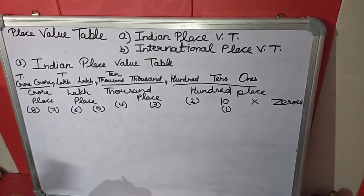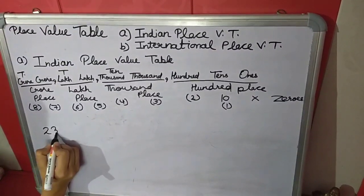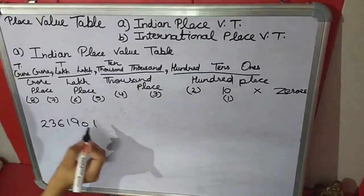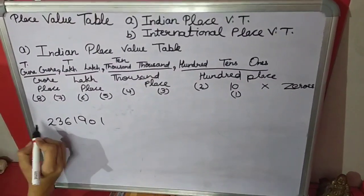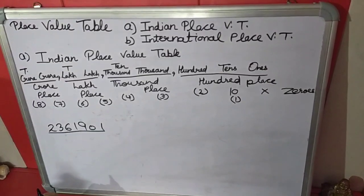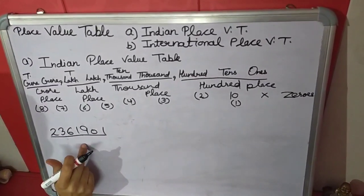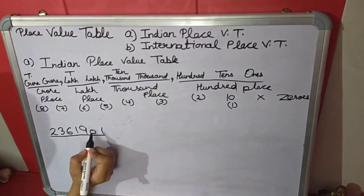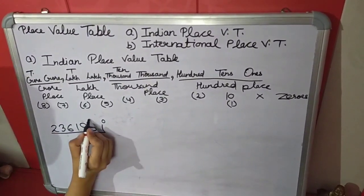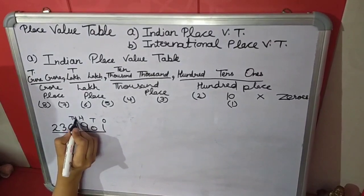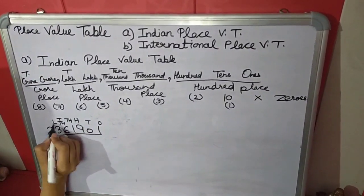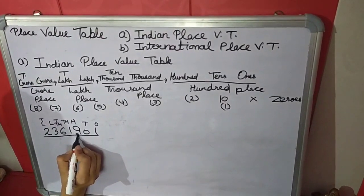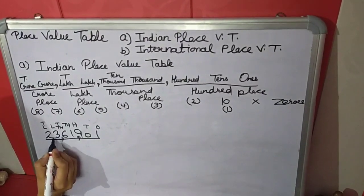Now we will take an example. You have to write this number in its number name using commas according to the Indian system. First of all we will put a short Indian place value table: Ones, Tens, Hundreds, Thousands, Ten Thousands, Lakhs, and Ten Lakhs. Now we will put commas: after Hundreds, after Ten Thousands, and after Ten Lakhs.